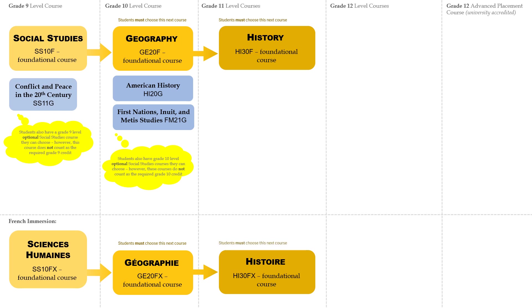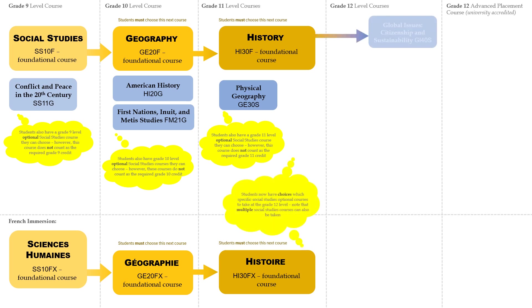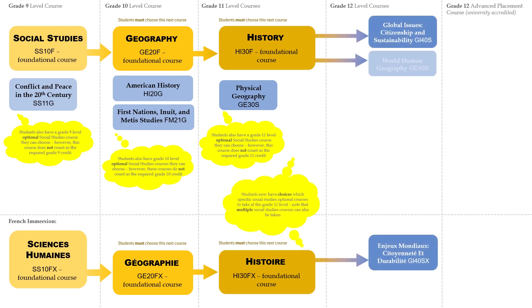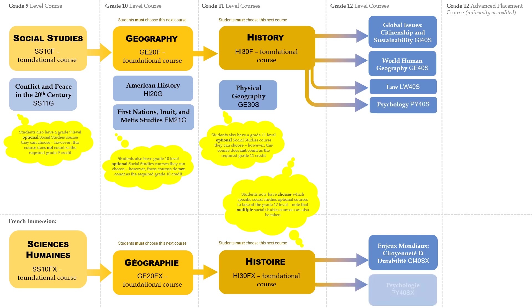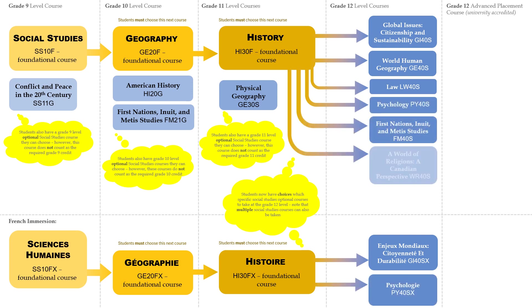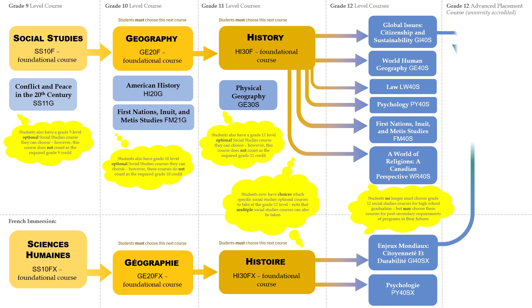Then a mandatory course in Grade 11. Students also have a Grade 11 level optional social studies course; however, this course does not count as the required Grade 11 credit. Students now have choices as to which specific social studies optional courses to take at the Grade 12 level. Note that multiple social studies courses can also be taken. An Advanced Placement course is also an option for students in Grade 12.